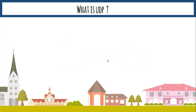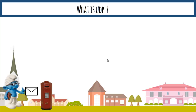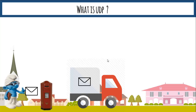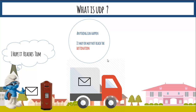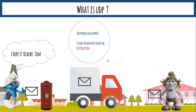To understand the reliability part, consider this example: a guy puts a letter in a post box and sends it to his friend Tom. Anything can happen along the way — an accident, or it simply may not be delivered. The sender hopes his best that it reaches Tom, but he isn't actually sure whether the letter arrived or not. That's what UDP is: you keep sending data with no guarantee it will reach the other side.